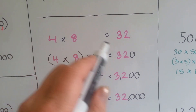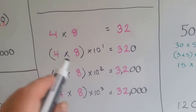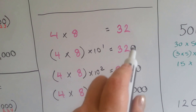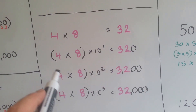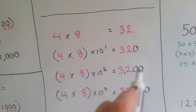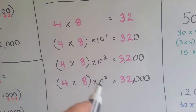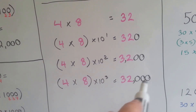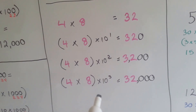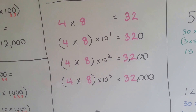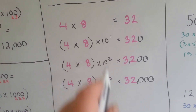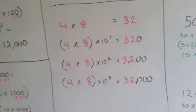Let's try it again. We've got 4 times 8, which is 32. 4 times 8 times 10 to the first power: 1 zero. 4 times 8 times 10 to the second power: 2 zeros. 4 times 8 times 10 to the third power: 3 zeros. Now, this only works for powers of 10 — it's not going to work for 5 to the third power or 9 to the second power. This only works for powers of 10.